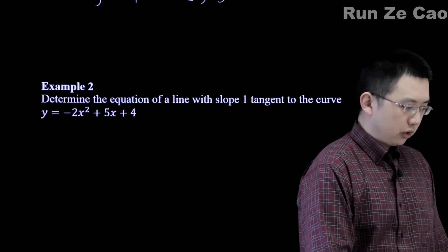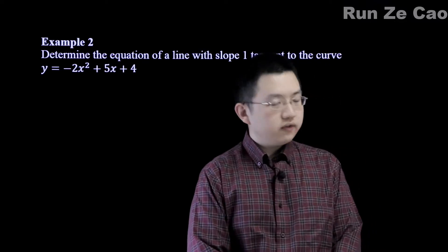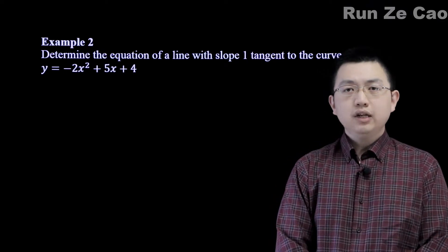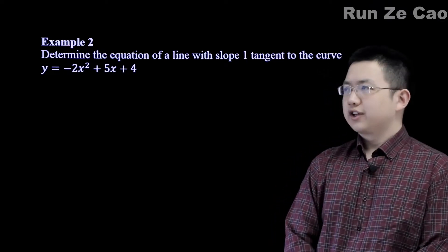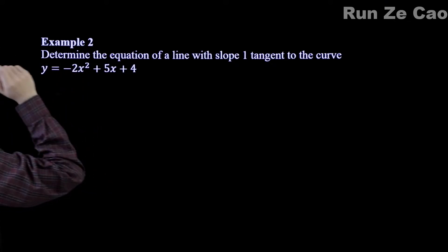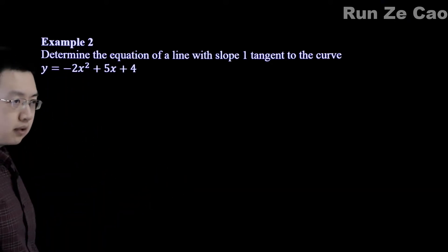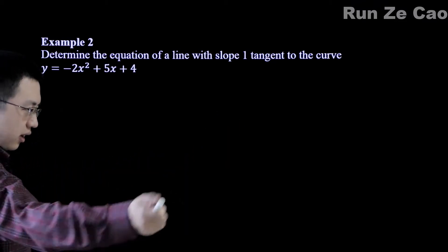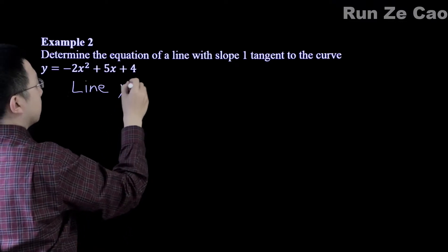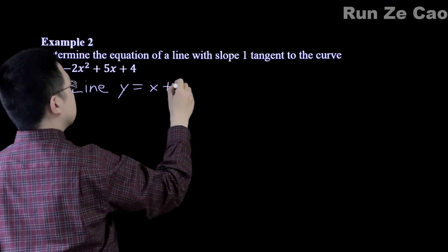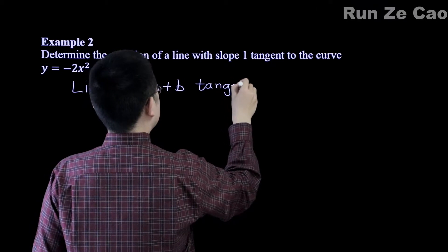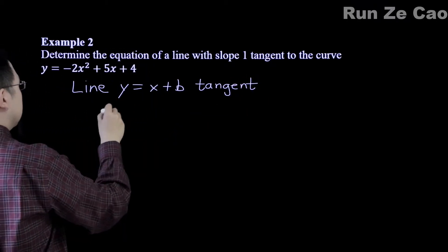All right, let's go on to more examples. Determine the equation of a line that has slope 1 and is tangent to this curve. There's a problem here. First of all, we haven't learned calculus yet, so we haven't learned derivatives. We can't use derivatives to just take the derivative, find where the slope equals 1, and there we go. So if we can't do that, how can we do this instead? Well, the line must be y equals x plus b, and this is tangent.